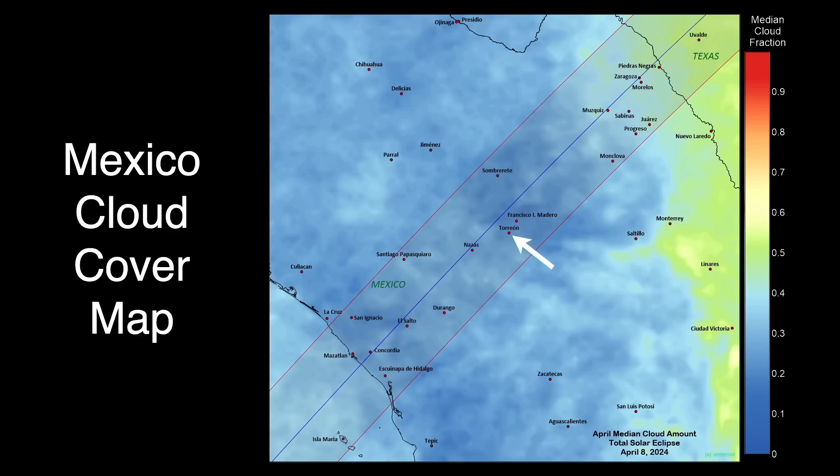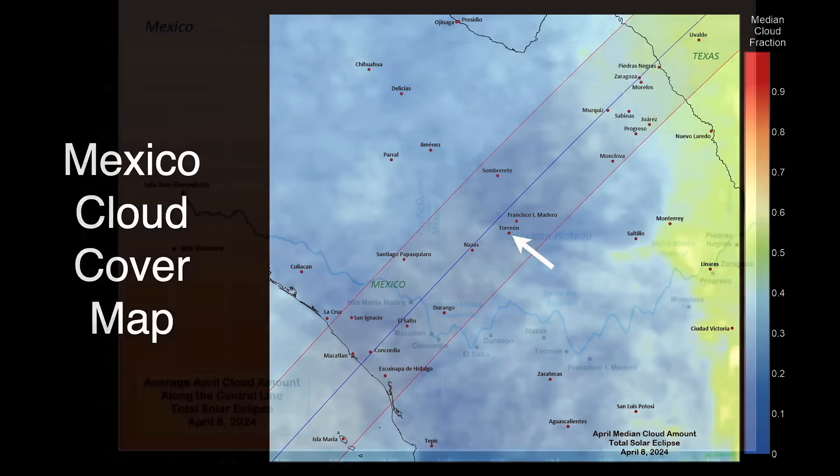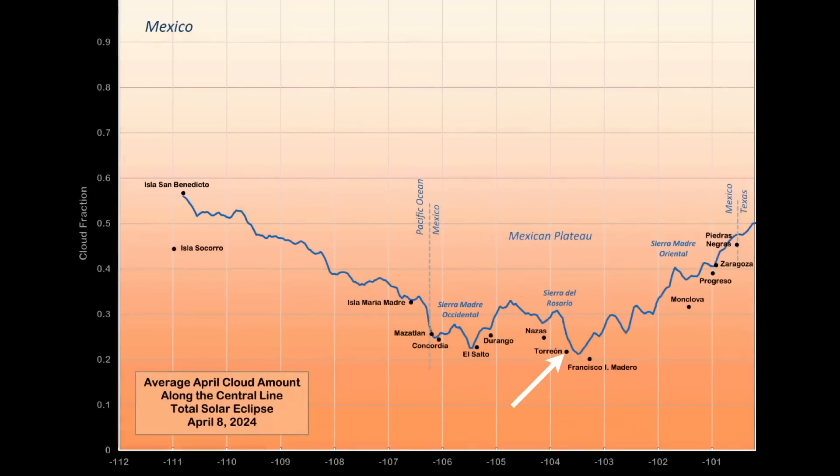This chart shows the average cloud cover as we follow the path of totality from out in the Pacific Ocean through Mexico until it hits Texas. As you can see, we chose the Torreon location carefully for its weather, and the fact that it's a fairly large city with available support facilities. You never know when you might need some supply, and a hardware store is handily nearby.